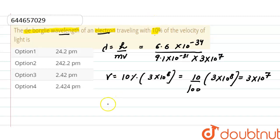So from here, after solving, the de Broglie wavelength is equals to 0.242 × 10^-10 meter, or we can write it as 24.2 × 10^-12 meter.